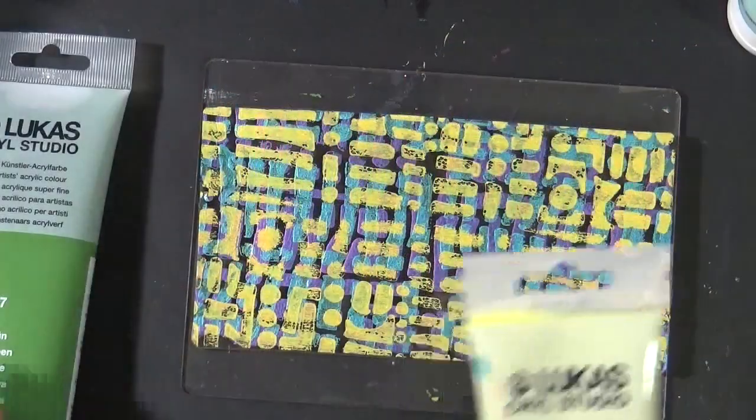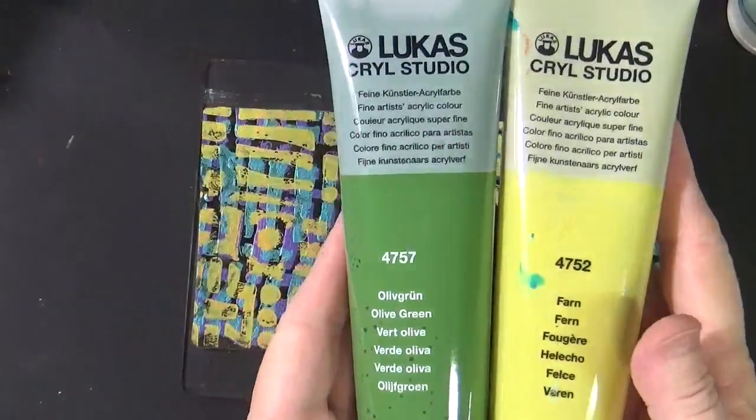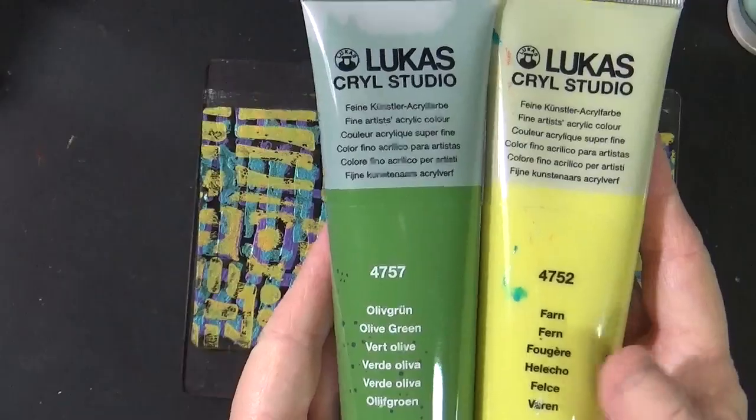And let's take a look at what this one's going to look like. And let's ombre these two colors together, which is Fern and Olive Green.